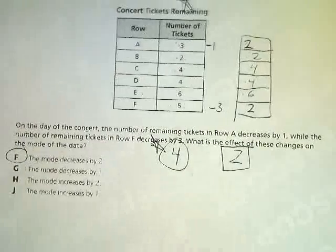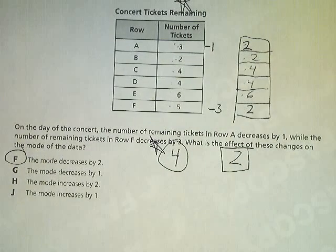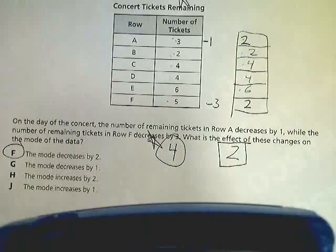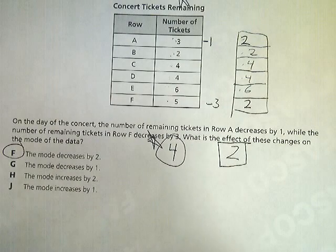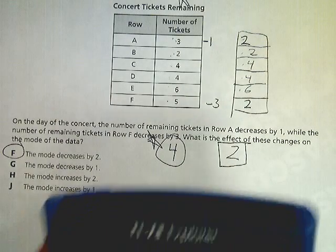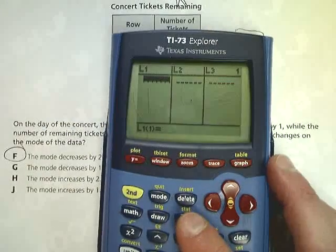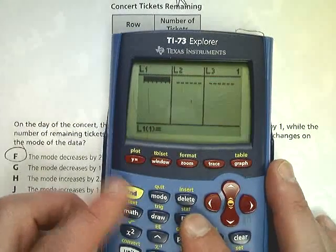However, if that's a little bit weird to see, or you forget what mode is, you can always just make lists. So go into your list, however you do that. In my calculator, I hit list, but I think if you have a TI-84, it's like second list.